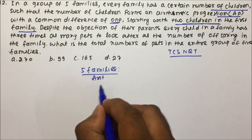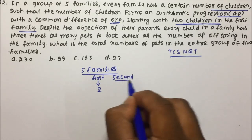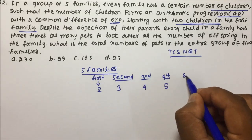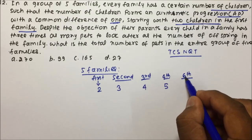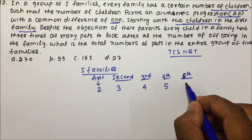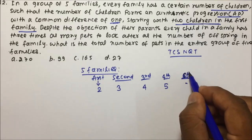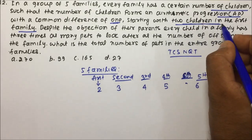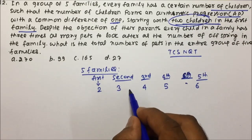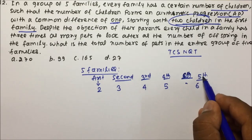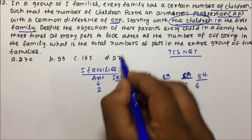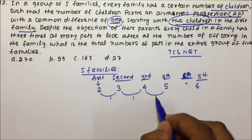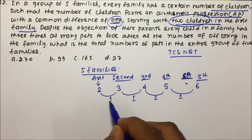There are 5 families. In the first family there are 2 children, the second family has 3 children, the third family has 4 children, the fourth family has 5 children, and the fifth family has 6 children. We took it this way because the number of children is in AP with a common difference of 1.